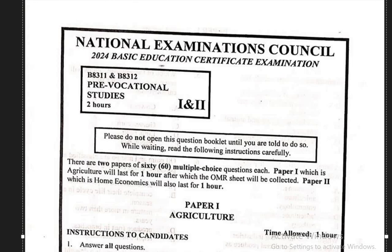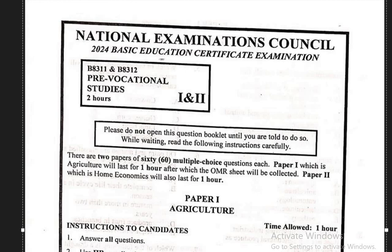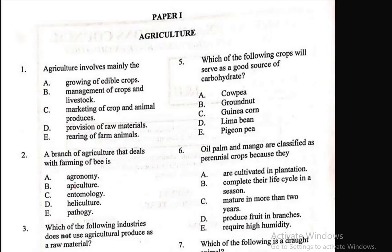Question 1: Agriculture involves mainly the — A) growing of edible crops, B) management of crops and livestock, C) marketing of crop and animal produces, D) provision of raw materials, E) rearing of farm animals. The correct answer is B. It's not as if the other options have nothing to do with agriculture, but agriculture involves mainly the management of crops and livestock.